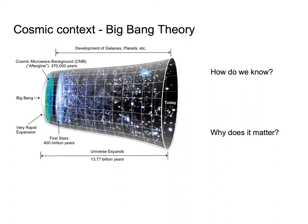To put things in a really big context, we can go back to the Big Bang Theory. Our best understanding of how the universe got to be where it is is this idea of a Big Bang. This is not an explosion — the universe, a little under 14 billion years ago, started out as a singularity, a single compact point of essentially infinite density of matter and energy, and then something happened to trigger that singularity to expand. The Big Bang generated the space that all of the matter and energy contained in that singularity expanded into.